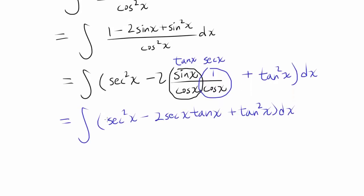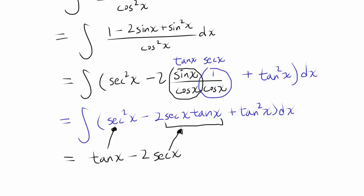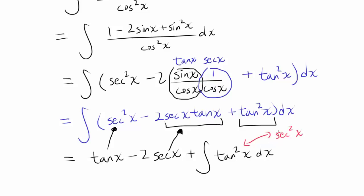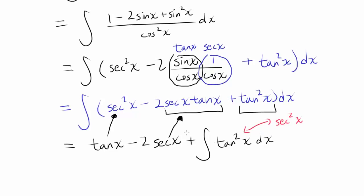So we have the integral of secant squared of x minus 2 secant of x tangent of x plus tangent squared of x dx, which is pretty easy to evaluate. Integrating secant squared gives us tangent of x. Minus 2 times integrating secant of x times tangent of x gives us simply minus 2 secant of x, because the derivative of secant of x is secant of x times tangent of x. The only tricky part is integrating tangent squared of x. There's a close relationship between tangent squared and secant squared, which is very beneficial since we know how to integrate secant squared.